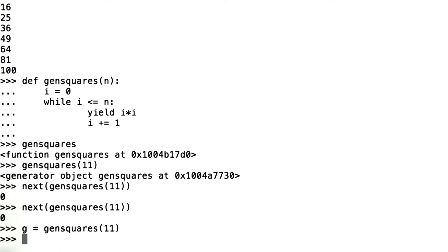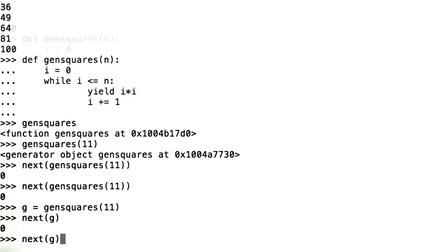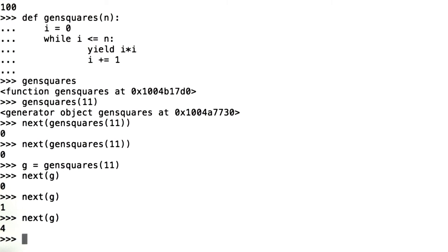So now we've assigned g to this generator object by calling gen squares. I can find next, 0, 1, and so on, just like we expect.